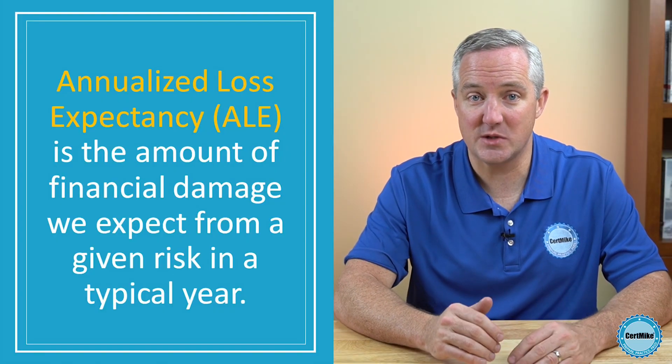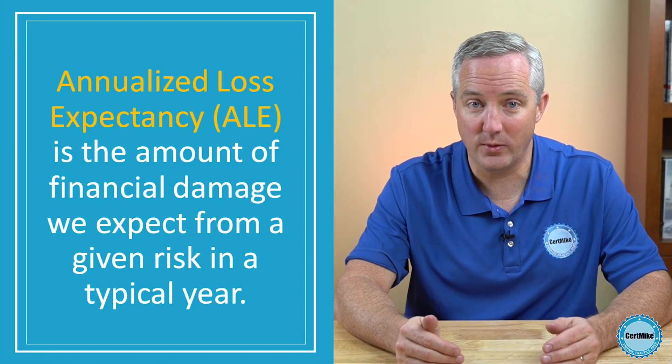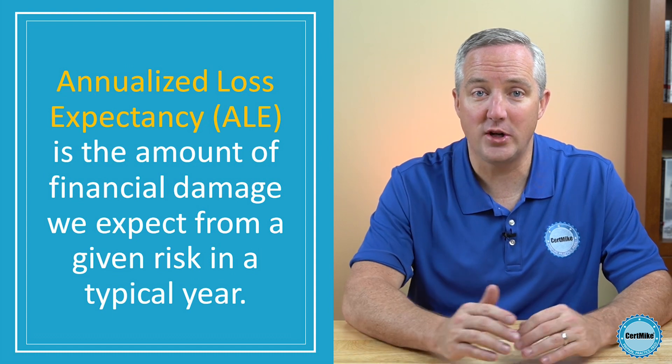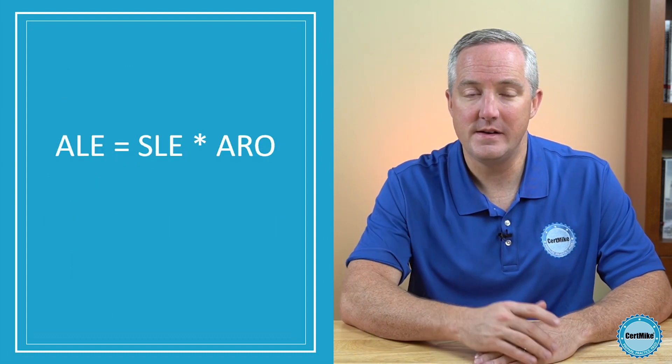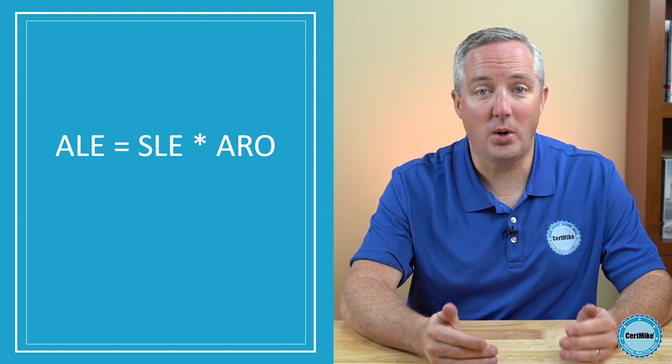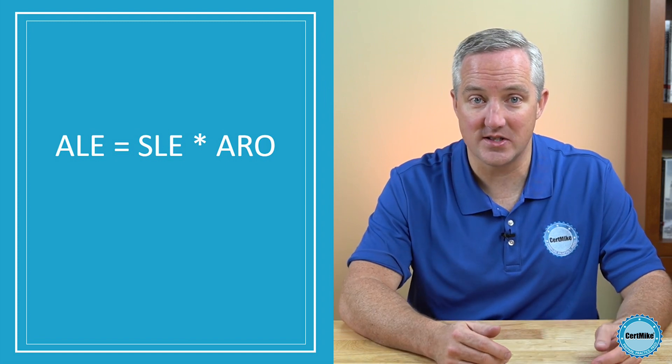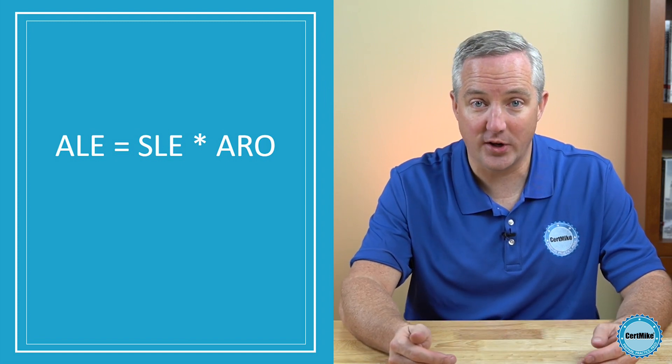Our risk analysis needs to combine the impact value that we came up with when we computed the single loss expectancy and the likelihood value that we documented in our annualized rate of occurrence. We do this by computing the annualized loss expectancy, or ALE. This is the amount of money that we expect to lose each year from that risk, and it's a good measure of the overall risk posed to our asset. We compute the ALE by multiplying the single loss expectancy and the annualized rate of occurrence together.